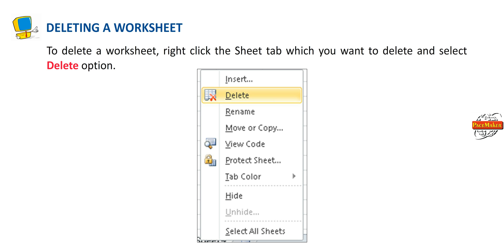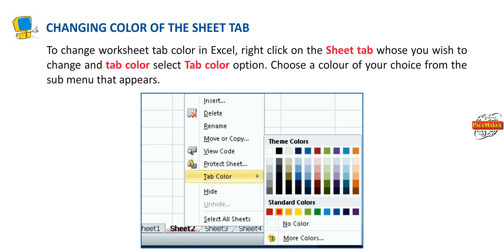Deleting a worksheet: To delete a worksheet, right-click the Sheet tab you want to delete and select the Delete option. Changing color of the Sheet tab: To change the worksheet tab color in Excel, right-click on the Sheet tab whose color you wish to change and select Tab Color. Choose a color of your choice from the sub-menu that appears.